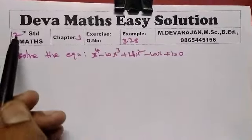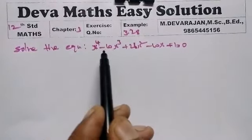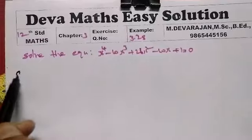Hi student, this is Deva. Now we are going to see example 3.2a. Solve the equation x power 4 minus 10 x cube plus 26 x square minus 10 x plus 1 equal to 0.